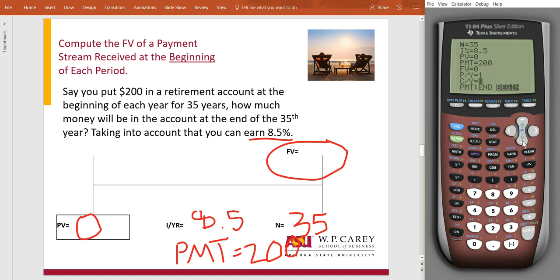Now one thing that I've already done, but you're going to have to do, is it's probably going to be in end mode like this. You'll see a big dark box around end. You need to change that to begin mode because it's telling us in this question that each of these payments are made at the beginning of each year. So you have to scroll all the way down, move over, and then click enter.